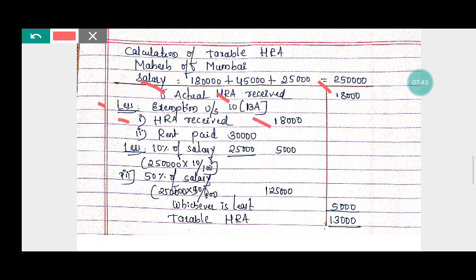Second — excess of rent paid over 10% of salary. Rent paid is Rs 30,000, minus 10% of salary. Salary is Rs 2,50,000, so 10% of salary is Rs 25,000. Rent paid minus 10% of salary equals Rs 5,000.